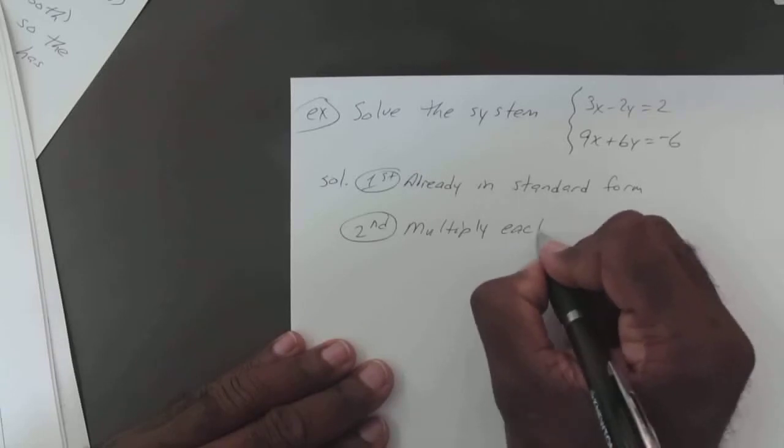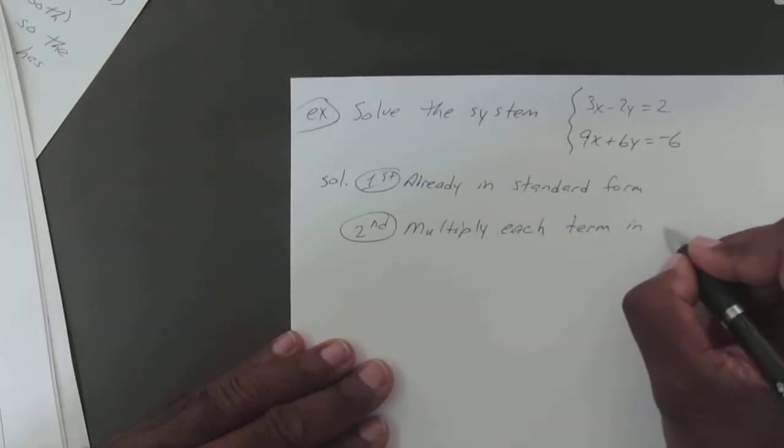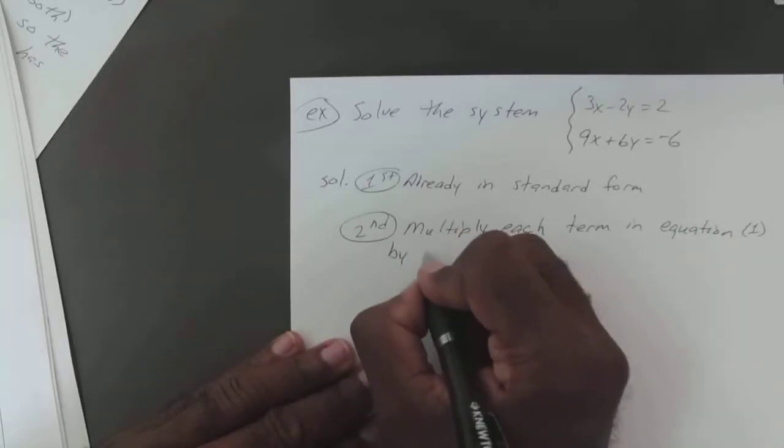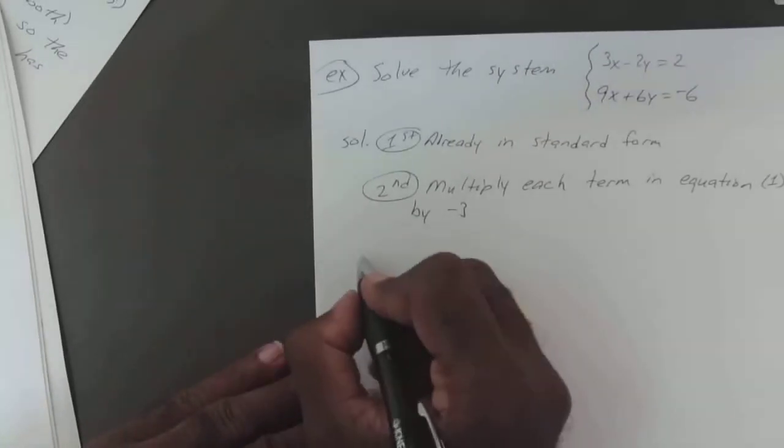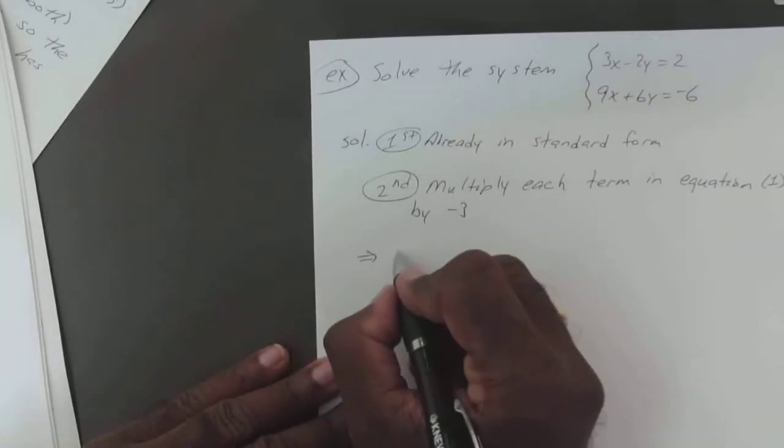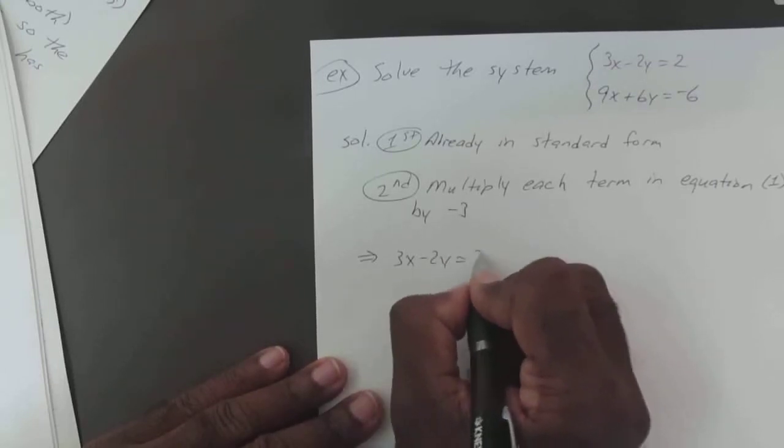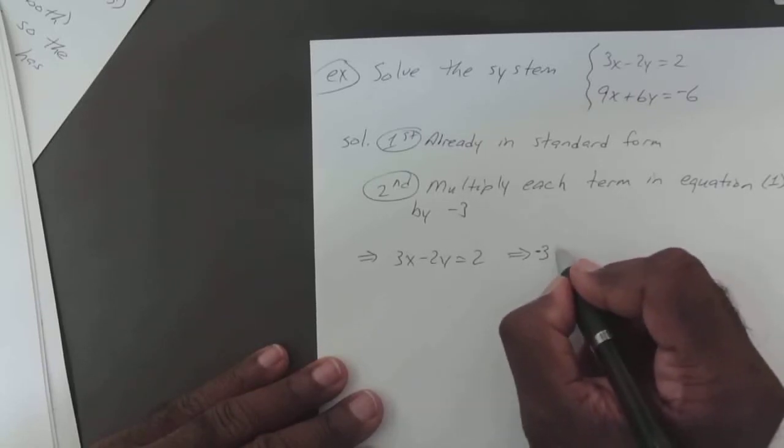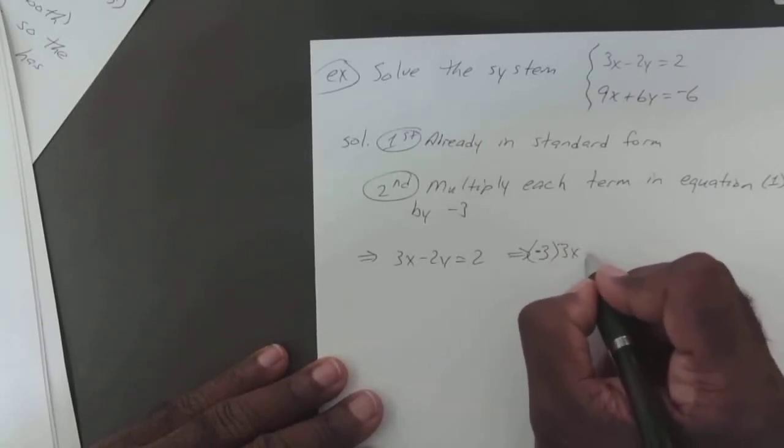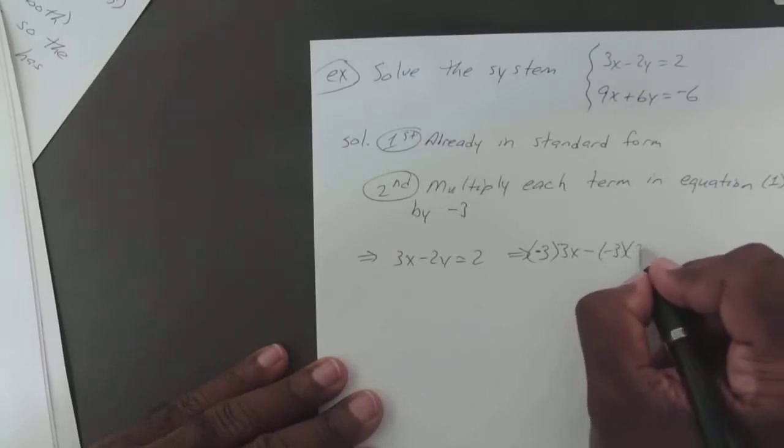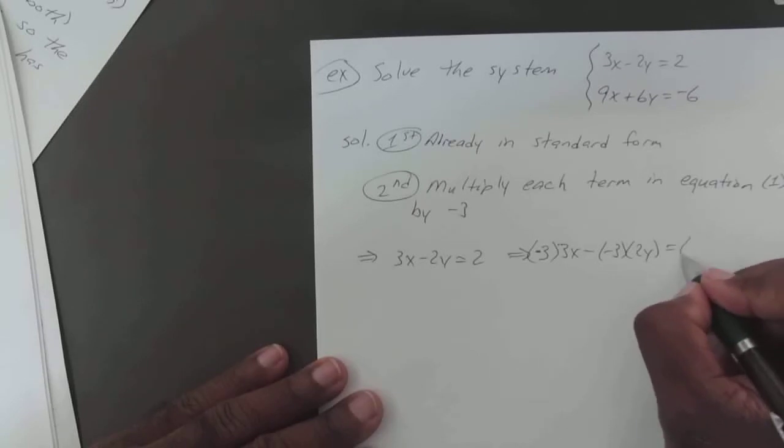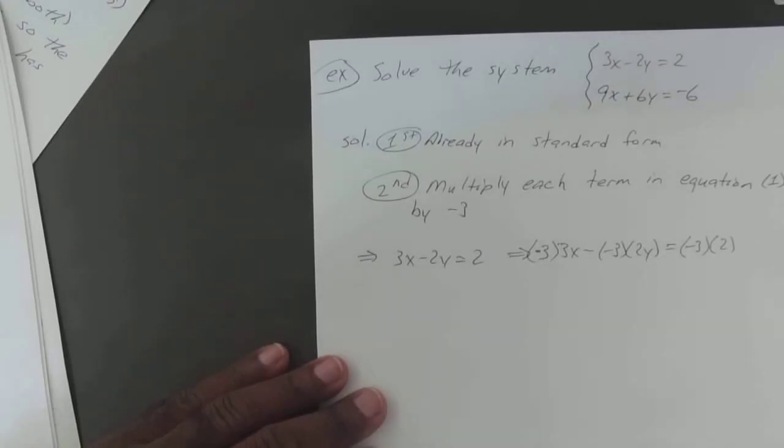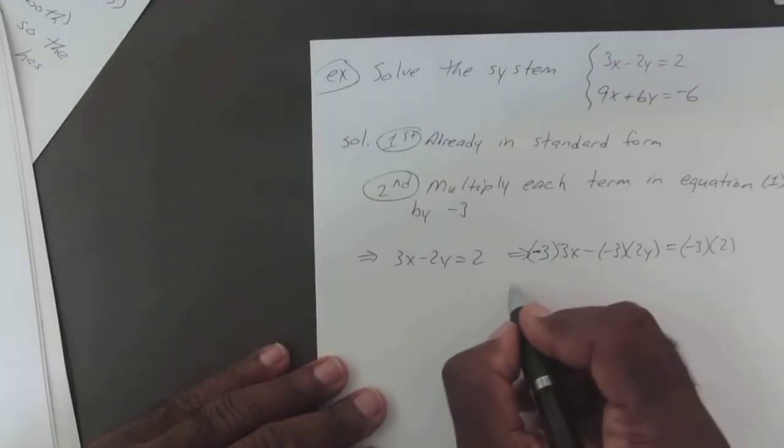So we're going to multiply each term in equation 1 by negative 3. So that means we have our 3x minus 2y equals 2, which will become negative 3 times 3x minus negative 3 times 2y equals negative 3 times 2. Just multiply each term by the same thing.